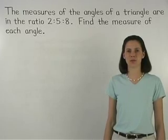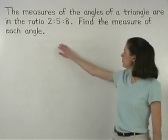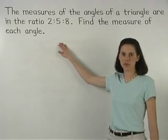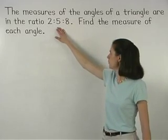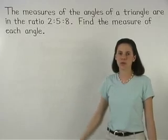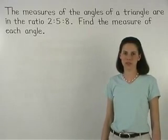In this problem, we're given that the measures of the angles of a triangle are in the ratio 2 to 5 to 8, and we're asked to find the measure of each angle.